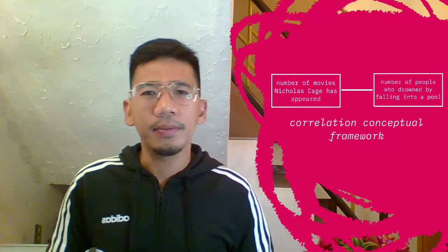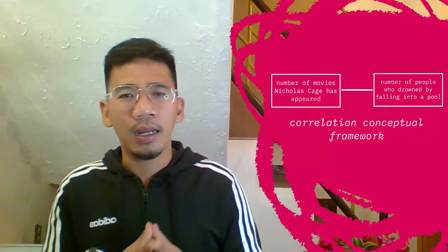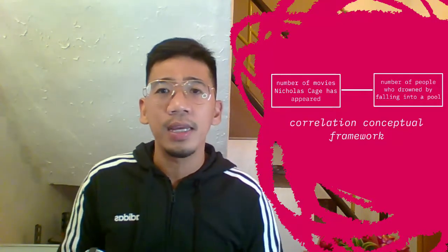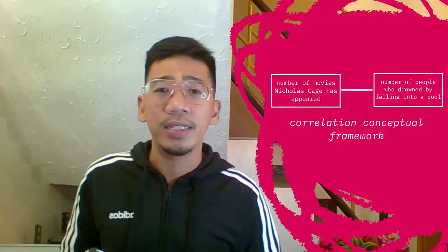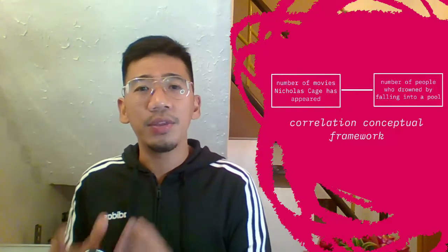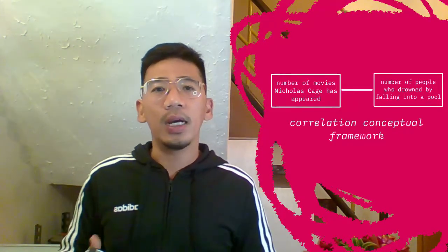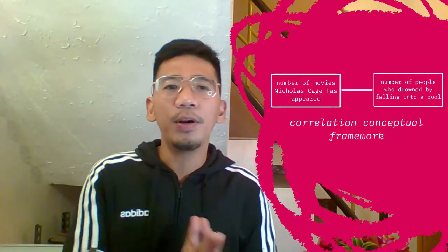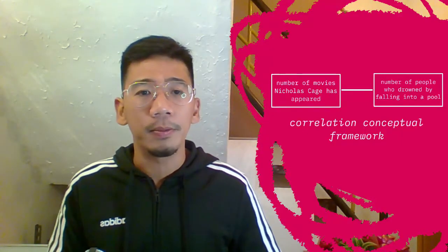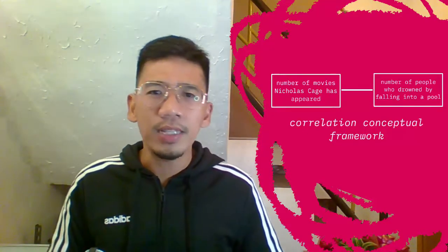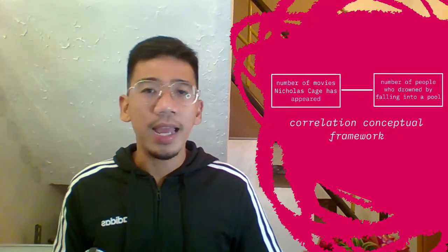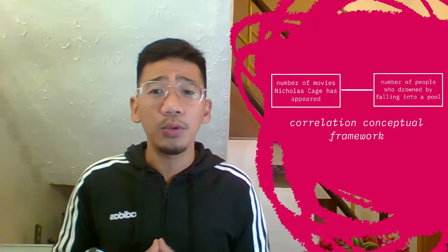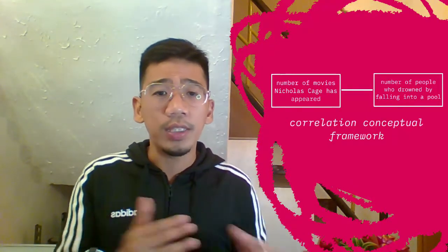When indicating a correlation instead of causation, you need to use a line. In this example, we are relating the number of movies Nicolas Cage has appeared in with the number of people who drowned by falling into a pool. We did not use an arrow to represent the relationship between these two variables; instead, we use a line.